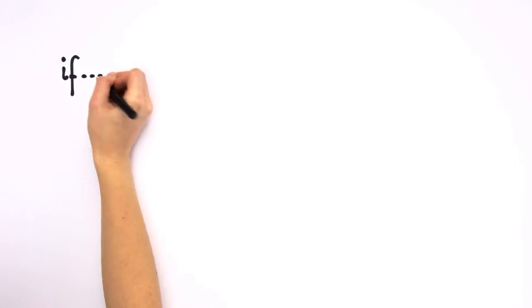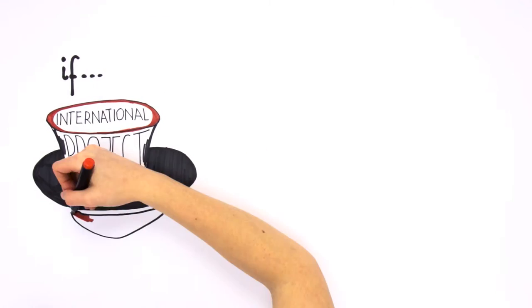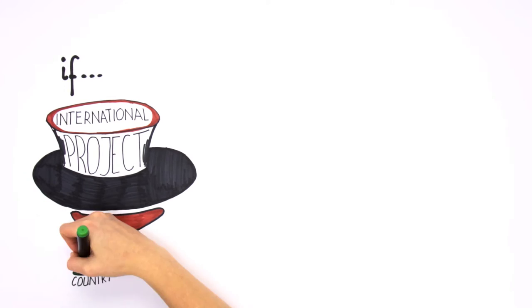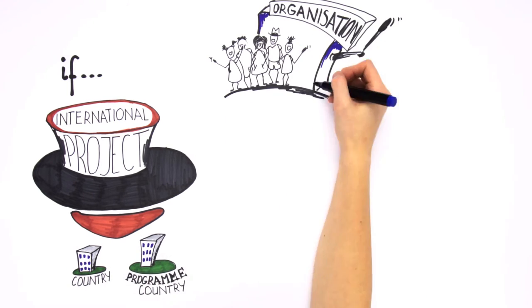If the project is international, then the activity must involve at least two participating organisations from at least two different countries, of which at least one is a programme country. National meetings should involve at least one organisation from a programme country.